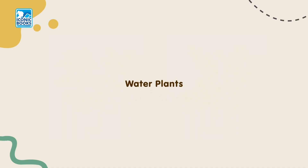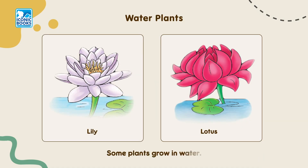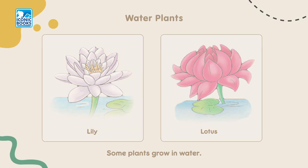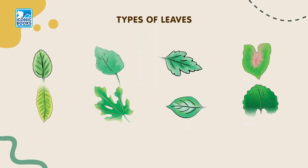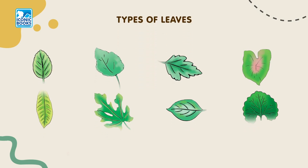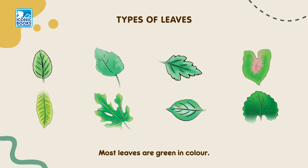Water Plants: Some plants grow in water. Types of Leaves: Leaves can be of different shapes, colors and sizes. Most leaves are green in color.